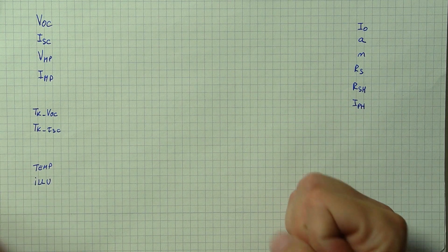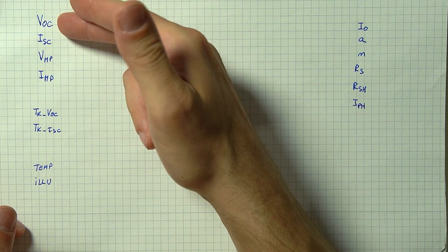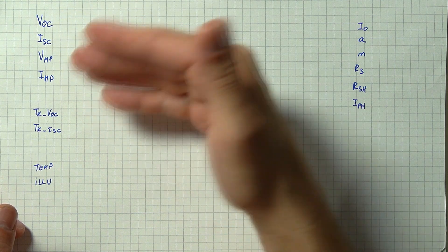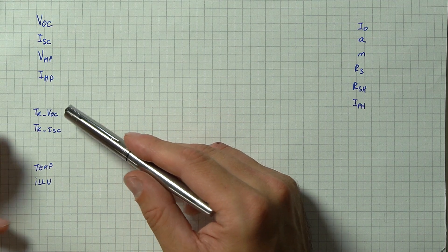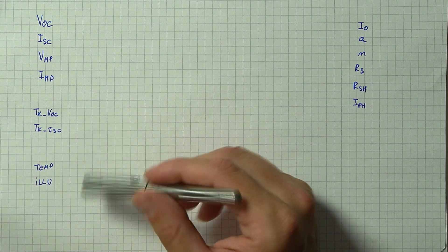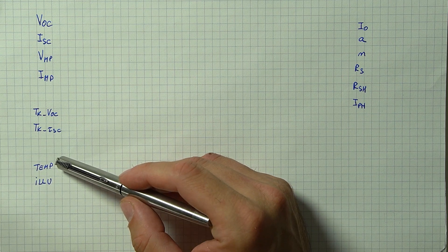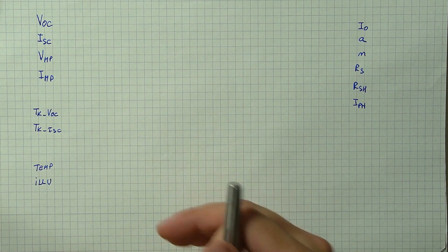So as input data we have the various definitions from the datasheet: our open circuit voltage, short circuit current and then the voltage and current for the maximum power point, but we also get the temperature coefficients for the open circuit voltage and the short circuit current. Now other than these, the other inputs that we will need are the temperature at which we will want to simulate and the illumination to which the solar panel is exposed.